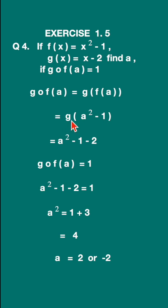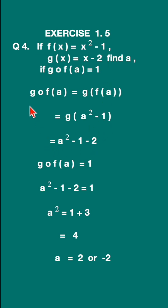So this is equal to g of (a squared minus 1). Now g(x) is x minus 2, so g(a squared minus 1) — replace x with a squared minus 1 — this becomes a squared minus 1 minus 2. So g(f(a)) equals a squared minus 3. It's given that g(f(a)) is equal to 1.